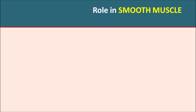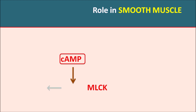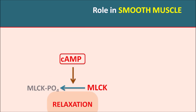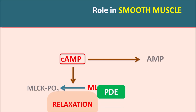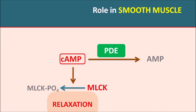In smooth muscle, cyclic AMP produces relaxation. Unlike cardiac muscle, cyclic AMP here does not work through protein kinase A but instead phosphorylates MLCK (myosin light chain kinase). Cyclic AMP promotes phosphorylation of MLCK, converting it to MLCK-phosphate, which becomes inactive, resulting in relaxation of the smooth muscle. Cyclic AMP in smooth muscle is hydrolyzed to AMP by phosphodiesterases, with many types of phosphodiesterases involved in various smooth muscle types.